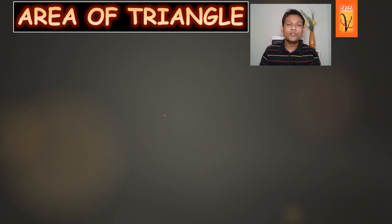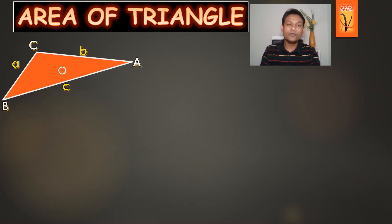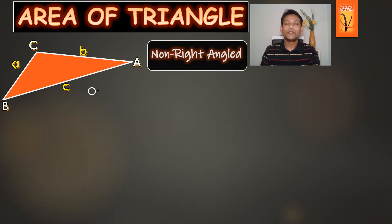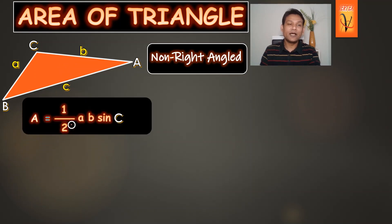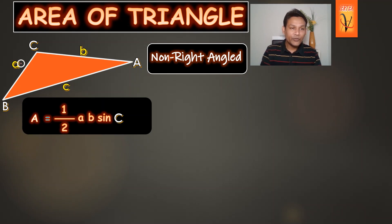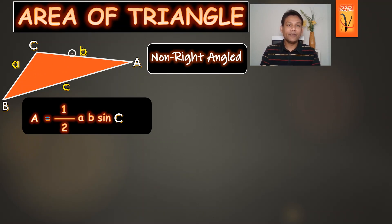We also have one more formula to find the area of a non-right angle triangle using all three sides. In a non-right angle triangle, the formula is: area = ½ × A × B × sin C. Here A and B are two sides, and C is the included angle between them — the angle between sides A and B. That's why we use A, B, and sin C.